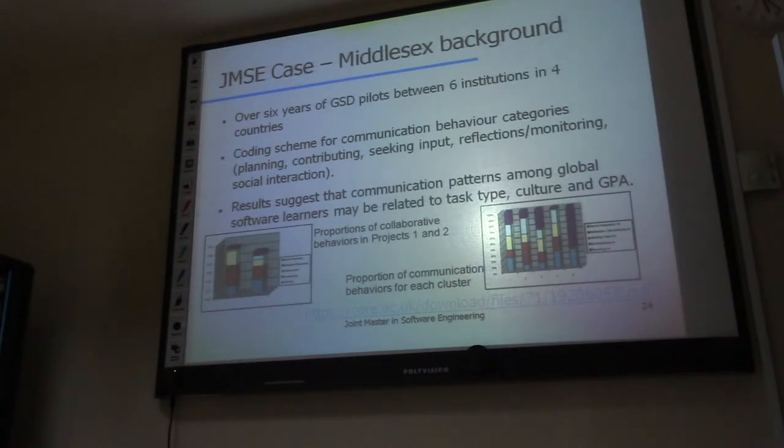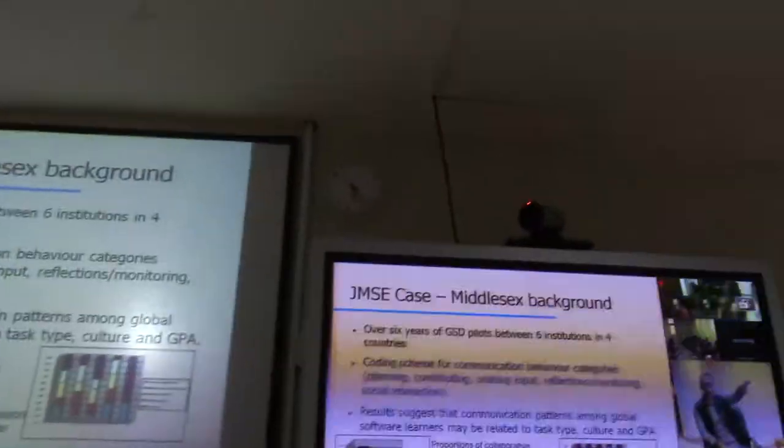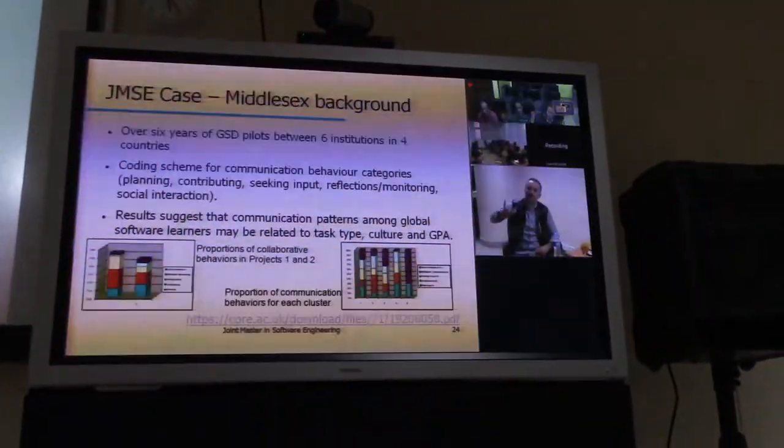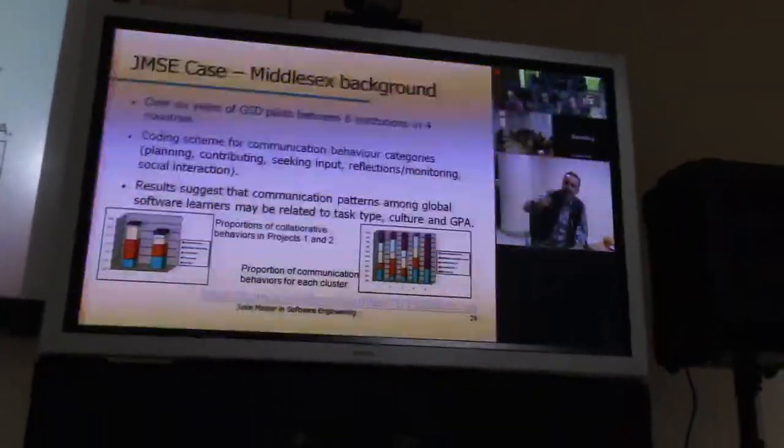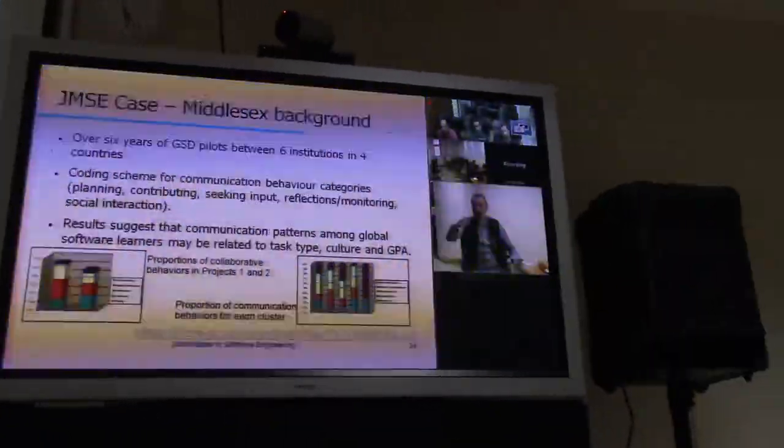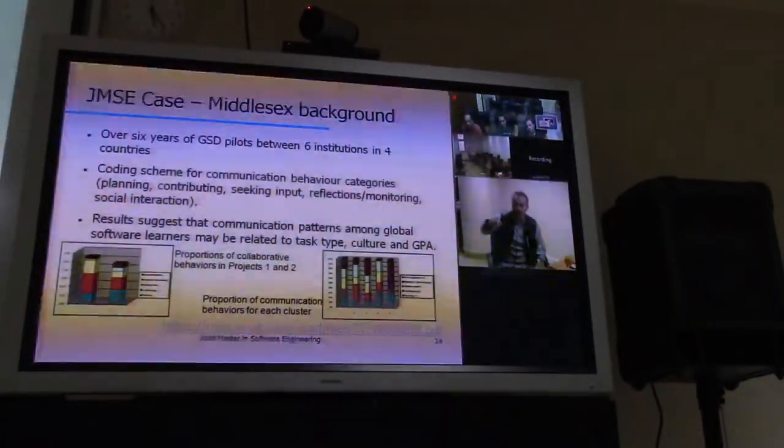For example, by the way, the four countries were United States, United Kingdom, Turkey and Panama. So these were the four countries. We had two universities in the United States and two universities in Turkey. And my students and their students, they would work together in projects. For example, my students would do the design. And the Turkey's people would do the testing. The Americans would do the database and we would work.